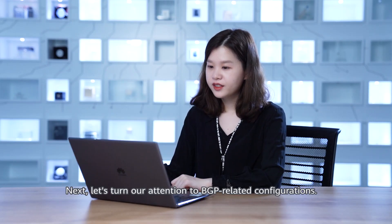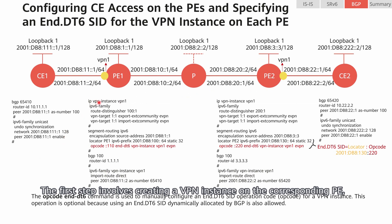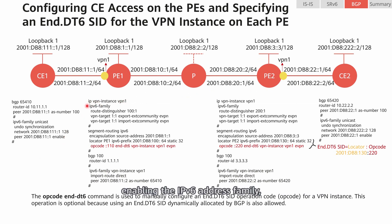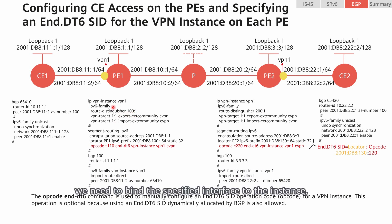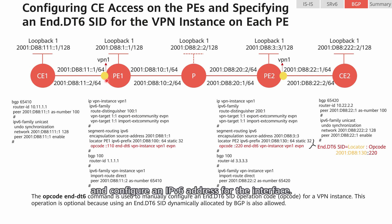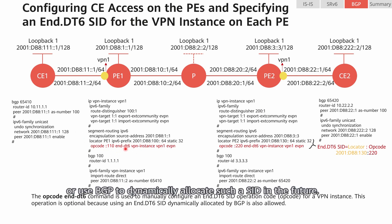Next, let's turn our attention to BGP-related configurations. The first step involves creating a VPN instance on the corresponding PE, enabling the IPv6 address family, and configuring an RD and VPN targets. The RDs of the two devices should be different. After configuring the VPN instance, we need to bind the specified interface to the instance, enable IPv6 on the interface, and configure an IPv6 address for the interface. Then, we can allocate an End.DT6 SID to the VPN instance, either by running the opcode command to configure it manually, or using BGP to dynamically allocate one.